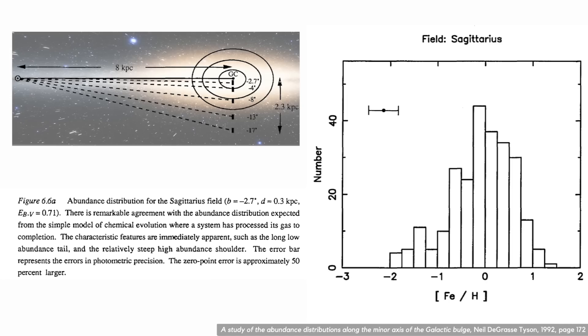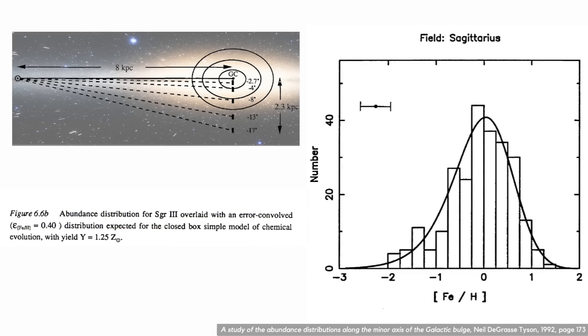So let's take a look at Tyson's abundance distributions. Here's the first of his seven fields, the one closest to the galactic center. He measures metallicity as the ratio of iron to hydrogen and says there is remarkable agreement with the abundance distribution expected from the simple model or closed box. He fits a theoretical curve with a yield of 1.25, which is a measure of how much metal is being returned to the interstellar medium. The x-axis is scaled to the abundance of the sun, so 0 would be the sun and 1 is 10 times the sun's abundance.